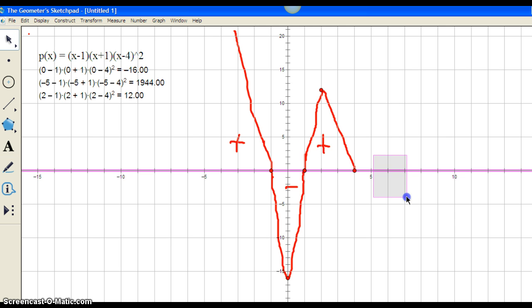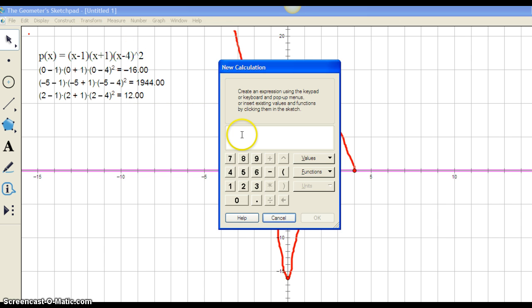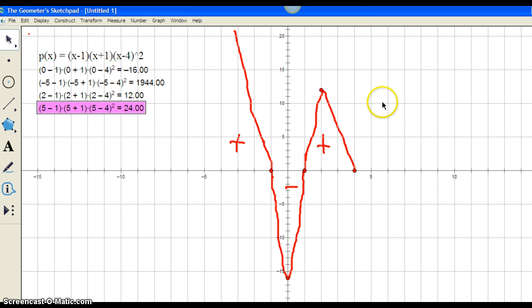One last area to check, and that's to this side of our zero of 4. So again, let's substitute in positive 5 and calculate our function. 5 minus 1 quantity times 5 plus 1 times 5 minus 4 squared, and our value is 24. So again, we can see on this side of the zero of 4, the function tends to positive infinity. I can draw it coming like this.